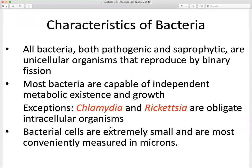There are a few exceptions — Chlamydia and Rickettsia are types of bacteria that require an intracellular host. In terms of size, bacteria are very small organisms; we need a microscope to visualize an individual cell. What we see on a petri dish with agar — what we refer to as plates — are actually colonies of bacteria: thousands or millions of cells that have colonized the plate.